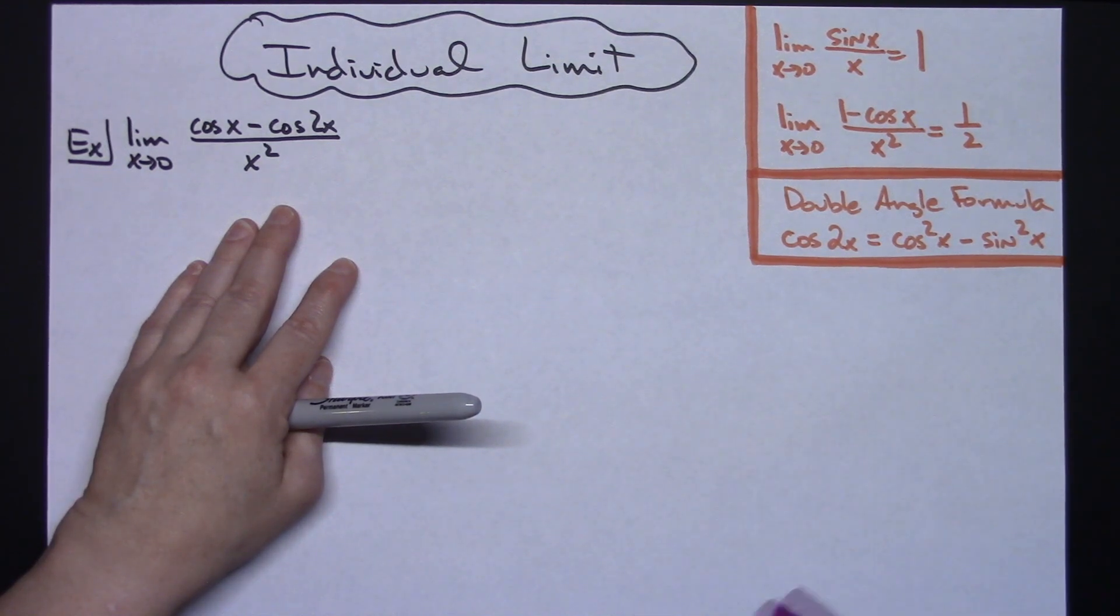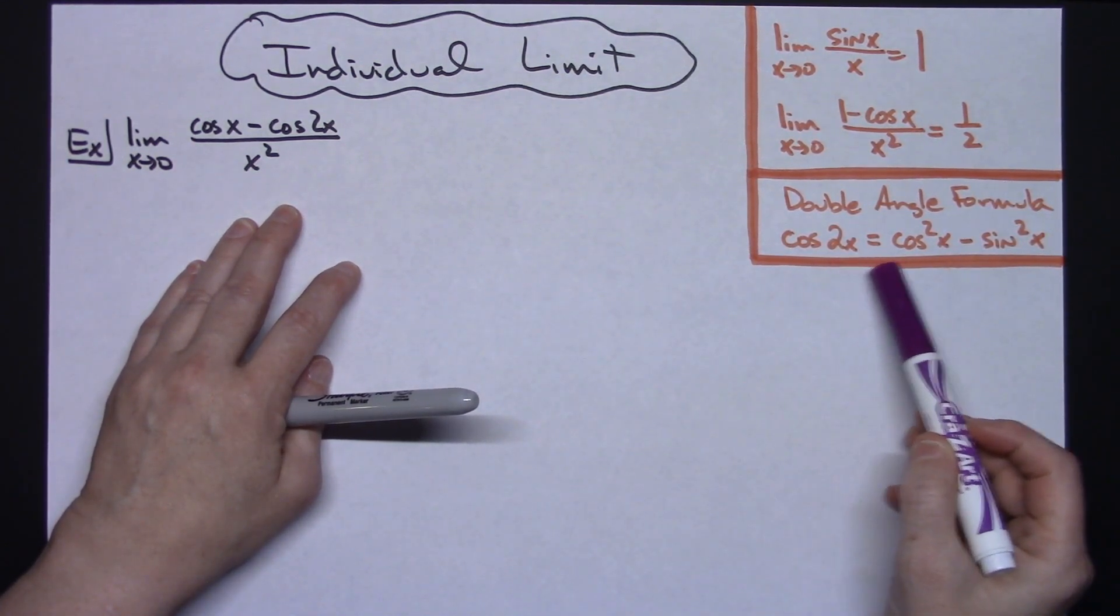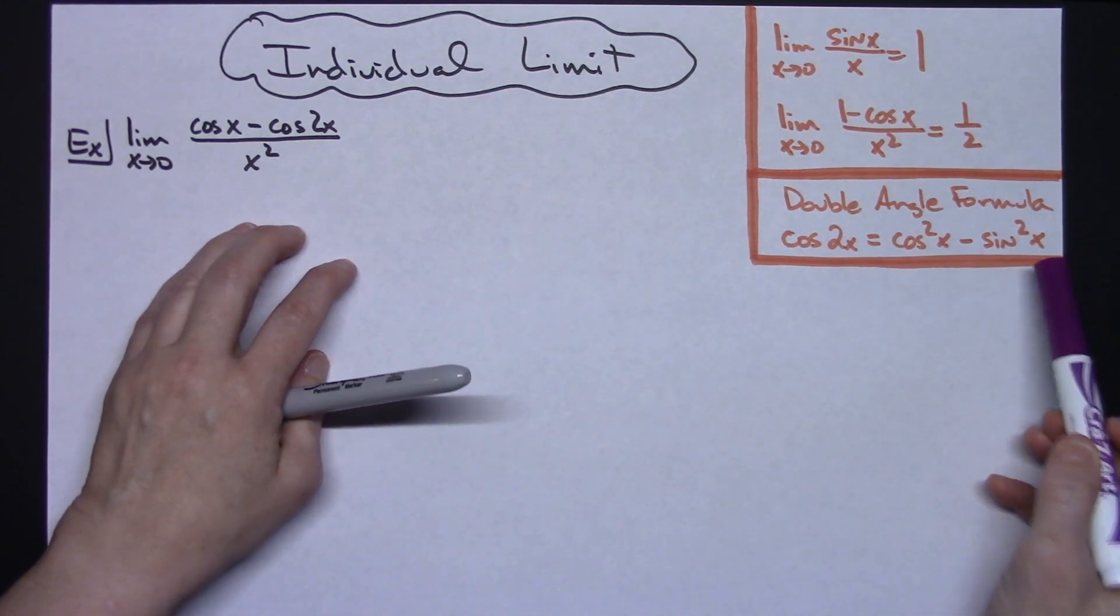that's going to involve a double angle formula. All of your double angle formulas, your trig identities, are going to be very helpful when doing trig limits. So cosine 2x is equal to cosine squared x minus sine squared x.